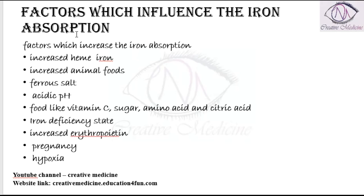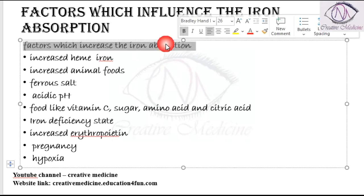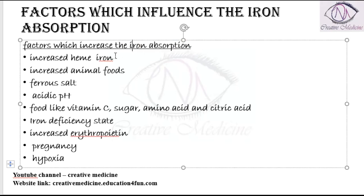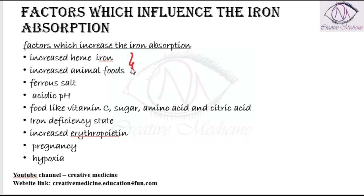Factors influencing iron absorption are the factors which increase iron absorption. Iron absorption can be increased by dietary fibers like increased heme iron, increased animal foods, or iron salts. These are dietary fibers which increase iron absorption.